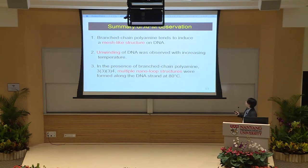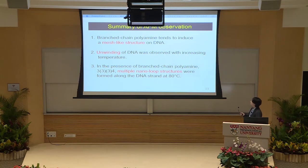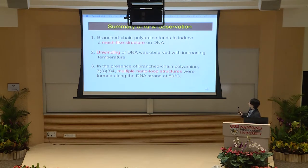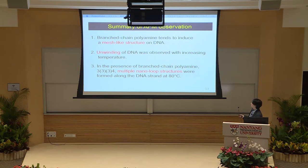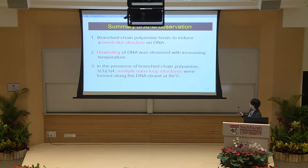I'd like to summarize the results of AFM observation. First, branched-chain polyamine tends to induce a mesh-like structure on DNA. Next, when temperature increases, folded DNA was unwound. Finally, in the presence of branched-chain polyamines, multiple nano-loop structures were formed around the DNA strand at high temperatures.